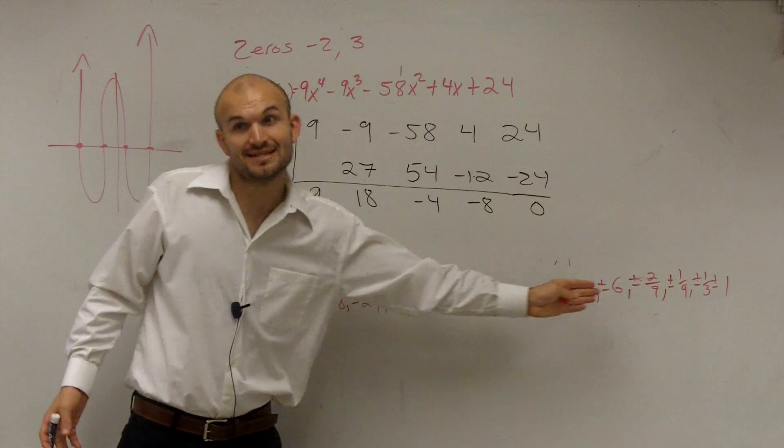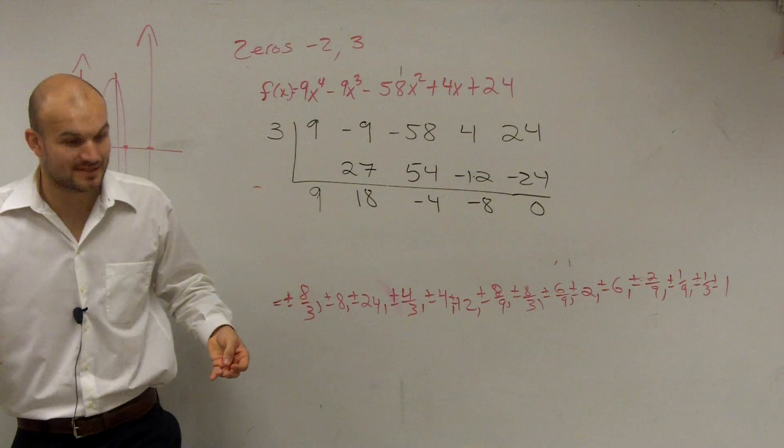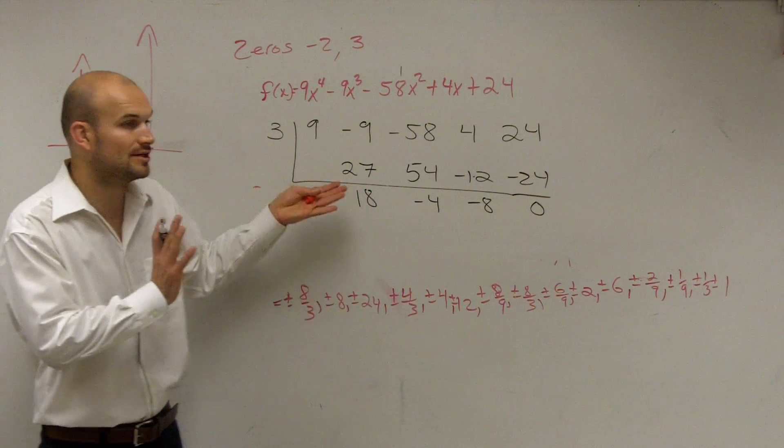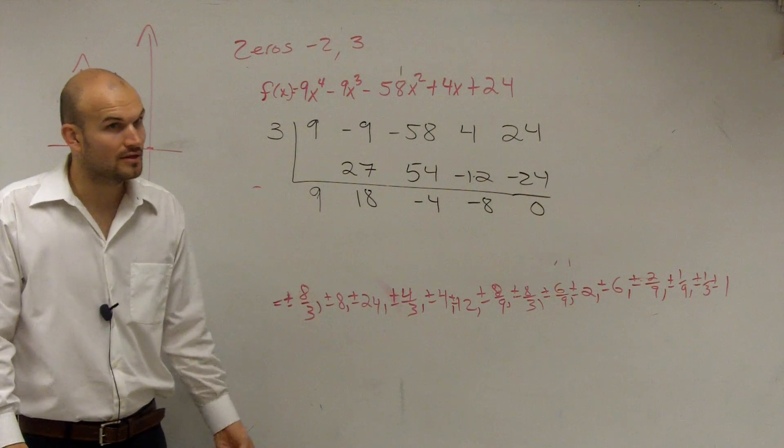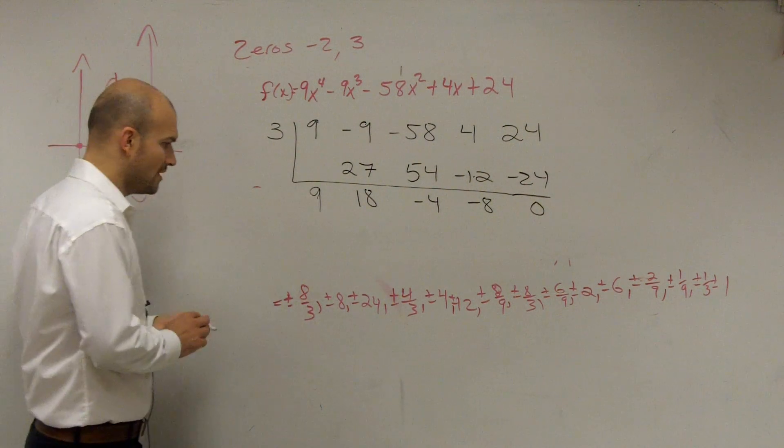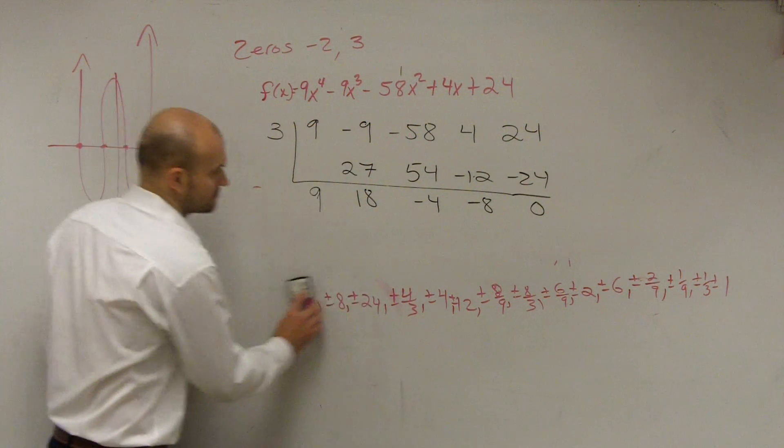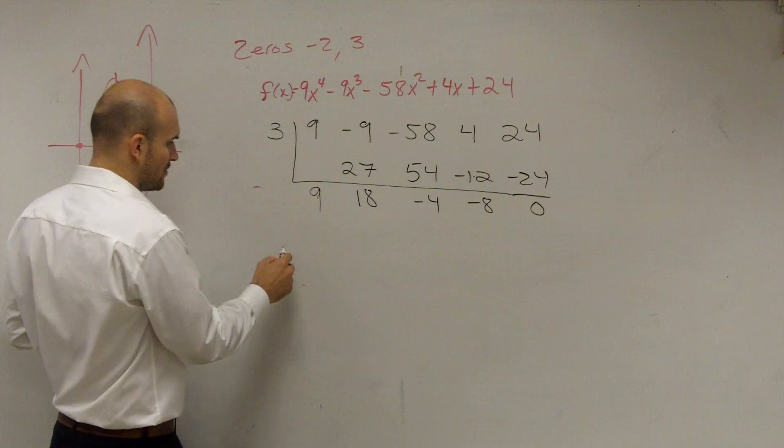So we used our graphing technology to help us determine a zero. Otherwise, you would have to guess and check out of all these. I don't want you to be doing that. That's why the graphing technology is so helpful for you guys to be able to determine. However, have we found out all the zeros yet? No. However, I did tell you that negative 2 also looked like one.